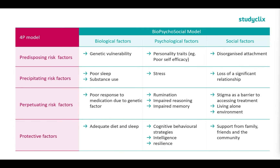Now we're going to add these two things together and look at both the four P's and the biopsychosocial model in a table. Starting with our predisposing risk factors: our biological factor is genetic vulnerability; our psychological factor is personality traits such as poor self-efficacy and neuroticism; and our social factor is how our parents parent us — in this case, disorganised attachment.